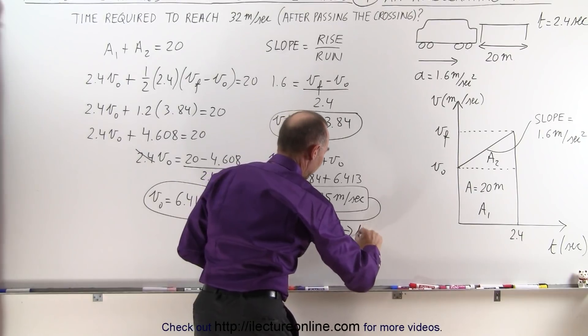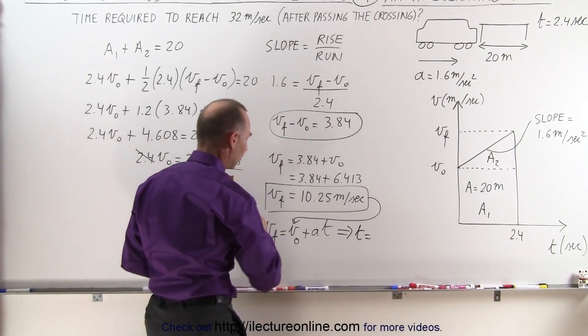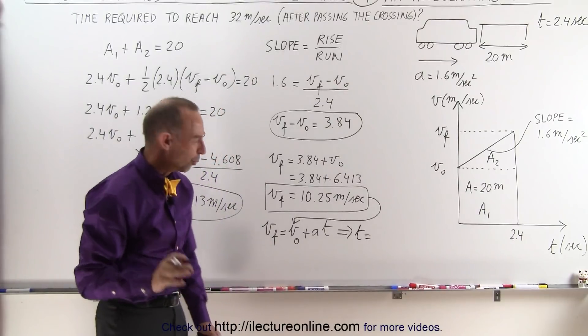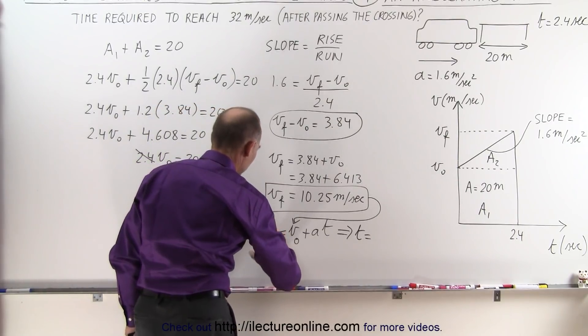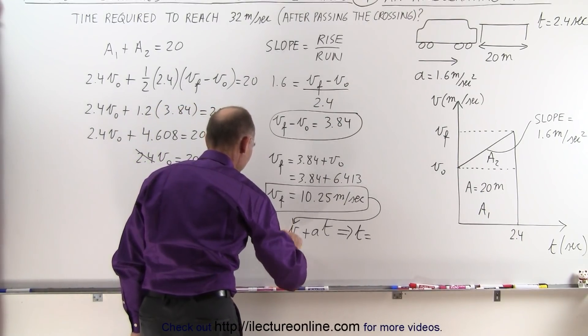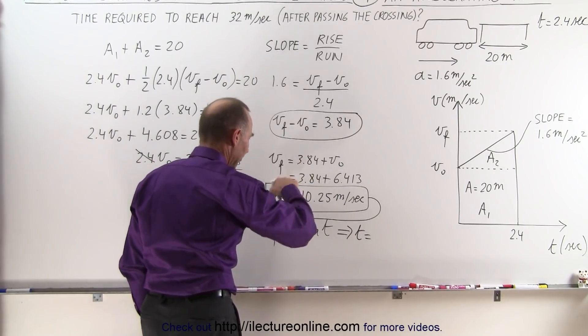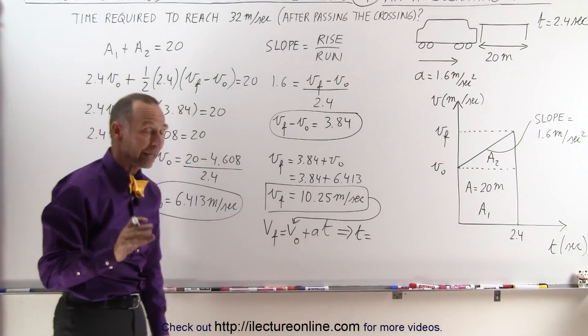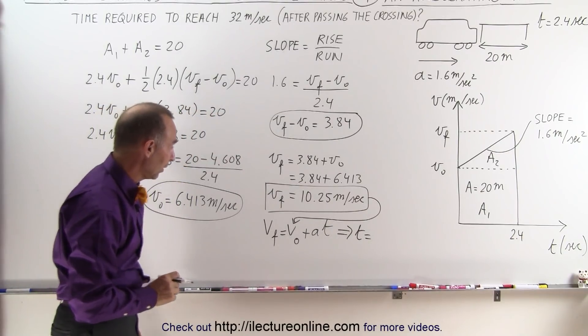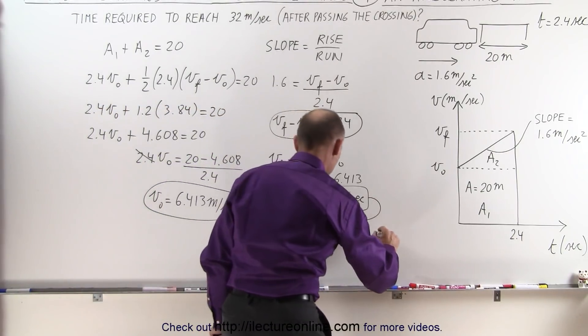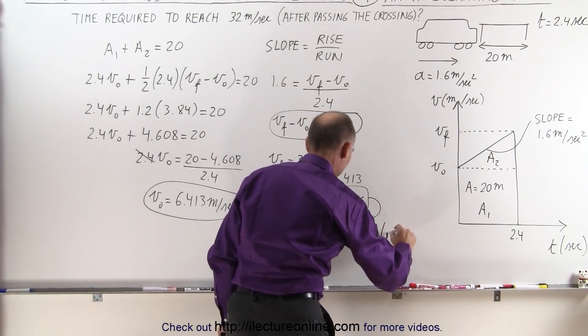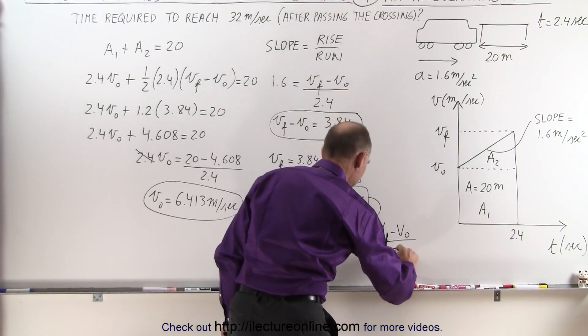So from here we can say that the time is going to equal the distance between those two. And just so we don't get confused, you know what I'm going to do? I'm going to call this a big V, and I'll call this a big V to indicate that those are not the same velocities as the v_initial and v_final we had in our first part of the problem. So we can say that t is going to equal V_final minus V_initial divided by a.